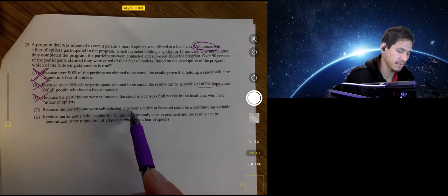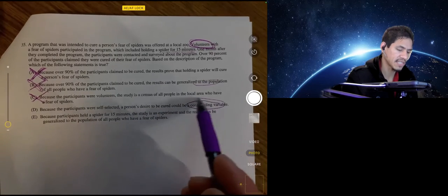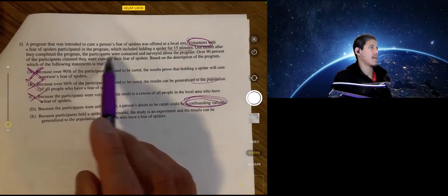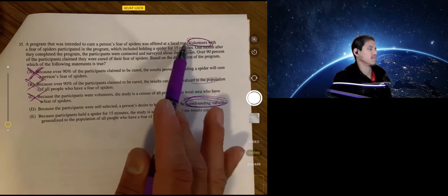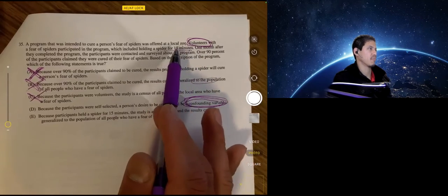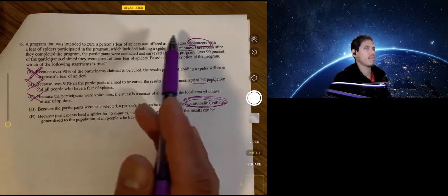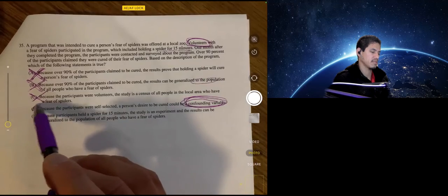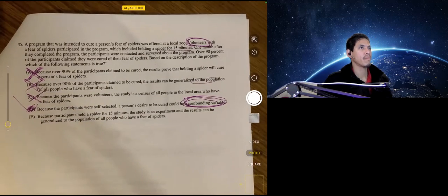Because the participants were self-selected, the person's desire to be cured could be a confounding variable. Okay, so yeah, that's, again, we would argue that since these are volunteers, we don't know that doing this method, holding a spider for 15 minutes, would work for everybody. Because not everyone can be claimed to have the same personality or characteristics as volunteers. So, our answer would be D.